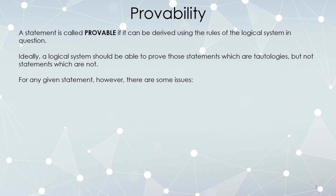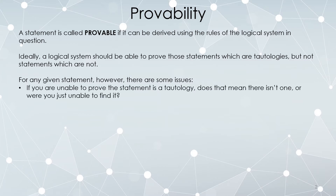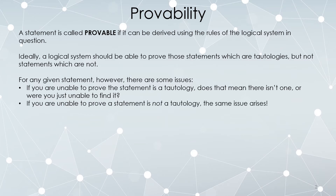For any particular statement you're looking at, a couple of things might show up. Suppose you're looking at a statement and you are unable to complete a proof. A rule of inference is actually a conditional statement which is a tautology. So if you can't quite construct a proof, does that mean it wasn't actually a tautology, or does that mean you were simply not able to complete the proof? Similarly, if you're not able to prove something isn't a tautology, does that mean it isn't one, or were you simply not able to contradict it?